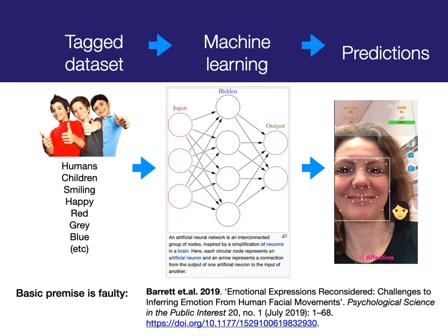You could imagine a dictator who installs emotion recognition everywhere, and while giving a speech, everyone needs to smile and look respectful — if they don't, they might be thrown into jail for thought crimes. If these systems did evolve, we would probably end up with poker faces. Can you imagine a society where no one dares to show their true emotions because the computers might be watching?